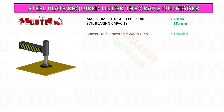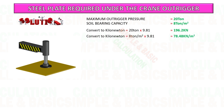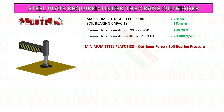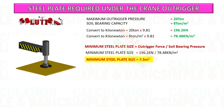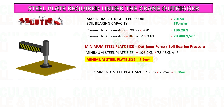First step: we need to convert the unit to kilonewtons. Second step: start to calculate the required minimum size of steel plate by dividing the outrigger force by the soil bearing capacity. The result — the minimum size of steel plate is 2.5 square meters.